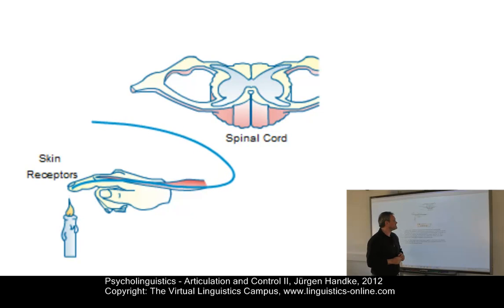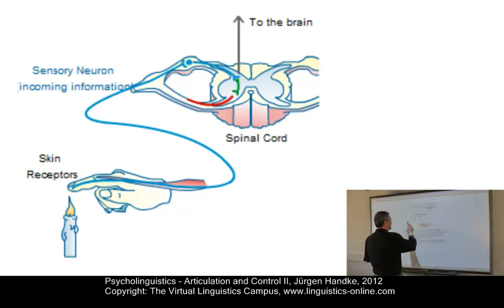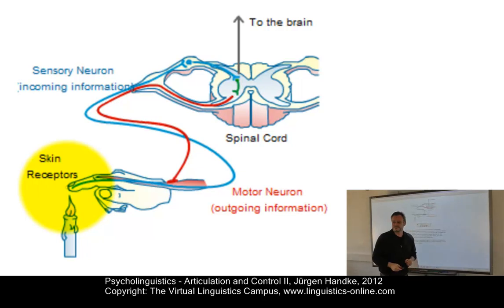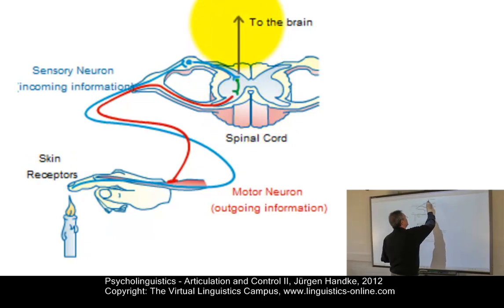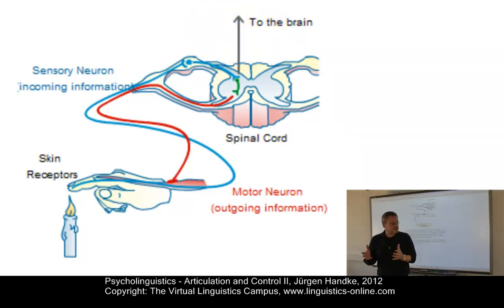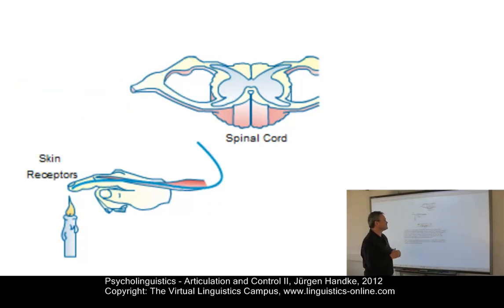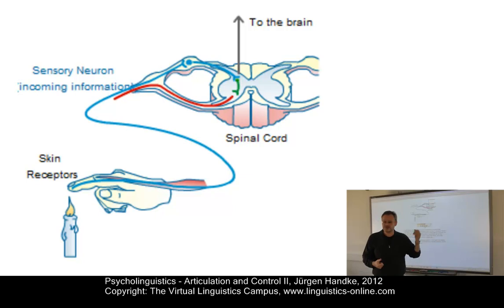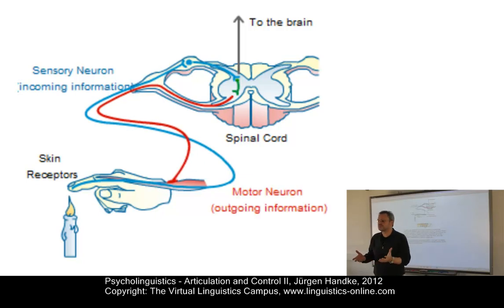Here is what happens. Here is the receptor, and here is the spinal cord and the link into the brain. A reflex response is extremely rapid. Examples are the withdrawal reflex of the hand from a painful stimulus, and the stretch reflex.